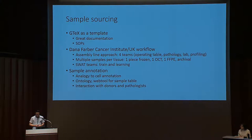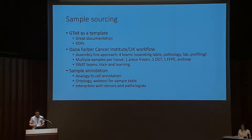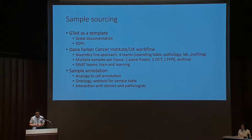Both teams have implemented an assembly line approach where four teams work together, starting from the operating table, then going to pathology, lab processing, and profiling. This enabled experts for each element to do their work and pass samples to the next stage time efficiently. Both sites were also thinking about saving multiple samples per tissue — one frozen, one OCT, one FFPE — and archiving samples so they can go back and profile them again for validation.